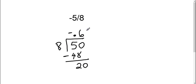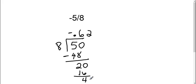8 goes into 20 two times. 2 times 8 is 16. We subtract and we have 4 left over. If we add another 0, 8 goes into 40 five times evenly with no remainder.